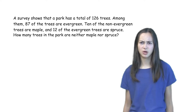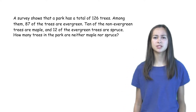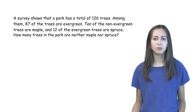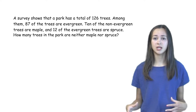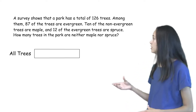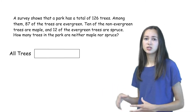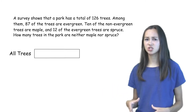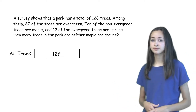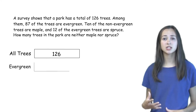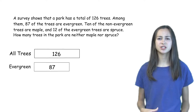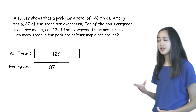This is a confusing problem, so drawing pictures will help us understand what this problem is saying. Drawing boxes can be very useful for representing all the numbers given. So we can draw a box to show all of the trees. Since there are 126 trees in the park, we can write 126 in this box. Now we can draw another box to represent the evergreen trees — there are 87 evergreen trees, so let's write 87 in this box.